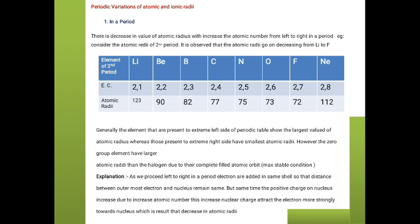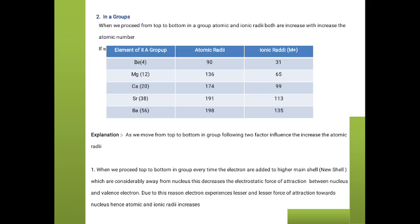Because the force of attraction increases, atomic radii decreases. Now what is the behavior of atomic radii in groups? When we proceed from top to bottom in the groups, atomic and ionic radii both increase with increasing atomic number. In a period, every electron is added to the same shell, adding to the same electronic cloud.